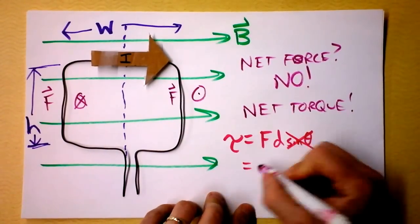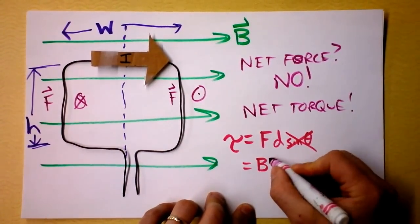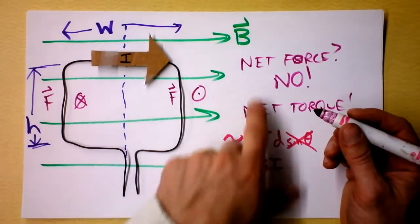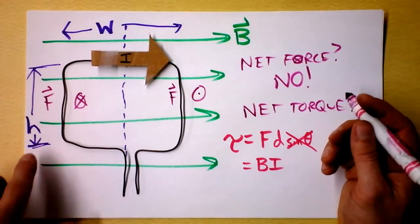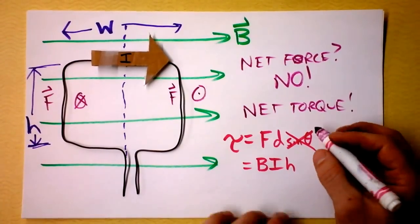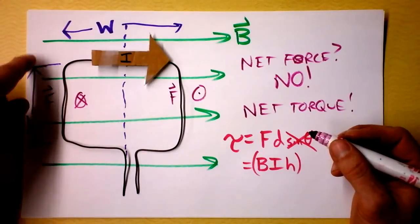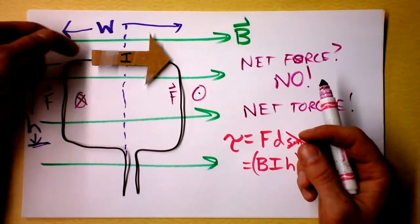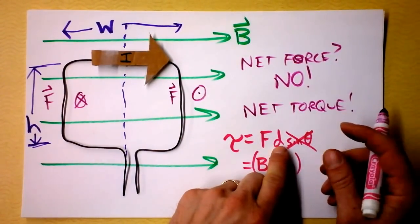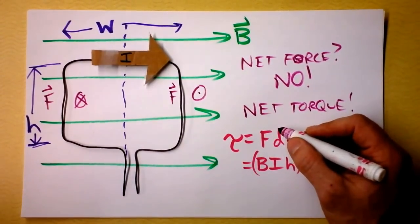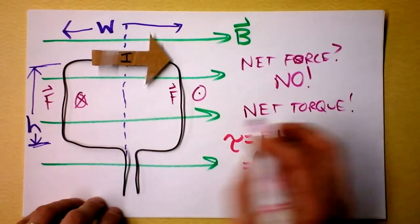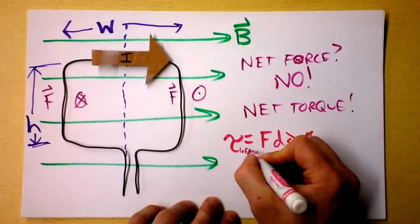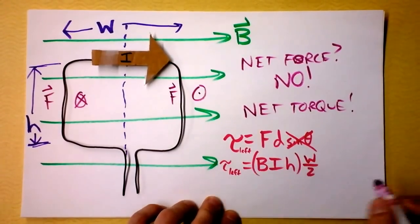The force is BIL — that's B times I times the length — where magnetic field strength B and current I both contribute to more torque. I multiply this by H, because H is the length of the wire that's feeling the force. The wire isn't feeling a force on the top or bottom, only on the sides. Then I multiply by the distance from the axis of rotation, which is W over 2. So the torque from the left side is B times I times H times W over 2.